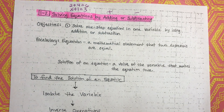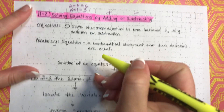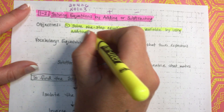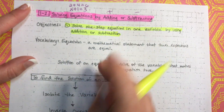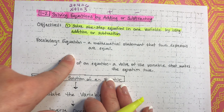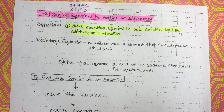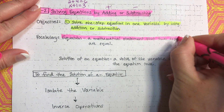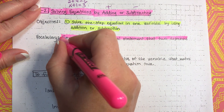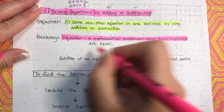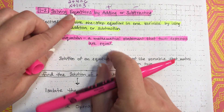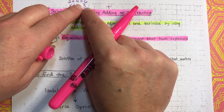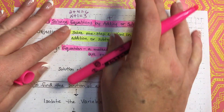So, the objectives for today: solve one-step equations in one variable by using addition or subtraction. Vocabulary — equation. An equation is a mathematical statement that two expressions are equal. So, look here: x plus 1 — that's an expression. And 3 is an expression, so two expressions are equal.